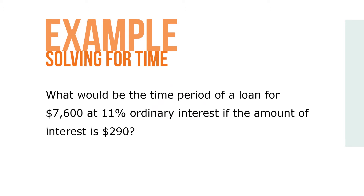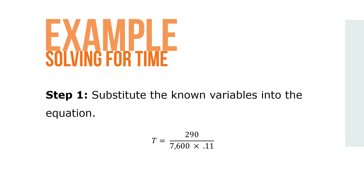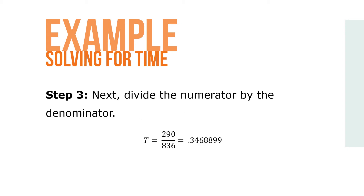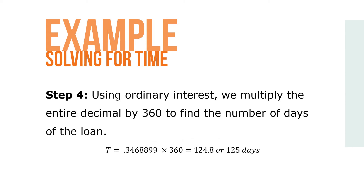Here's an example. What would be the time period of a loan for $7,600 at 11% ordinary interest if the amount of interest is $290? Step 1: substitute the known variables into the equation, so t equals 290 over 7,600 times 0.11. Calculate the denominator first: 7,600 times 0.11 equals 836. Next, divide the numerator by the denominator: 290 over 836 equals 0.3468899. Using ordinary interest, multiply the entire decimal by 360 to find the number of days: t equals 0.3468899 times 360 equals 124.8, or 125 days.